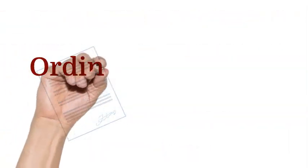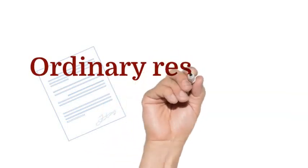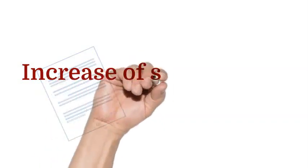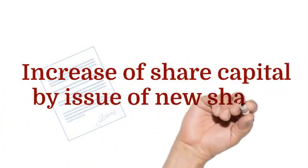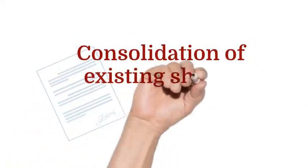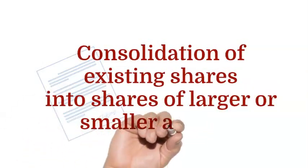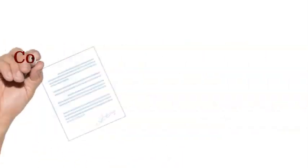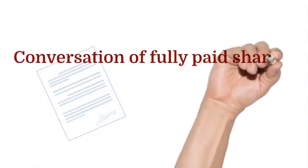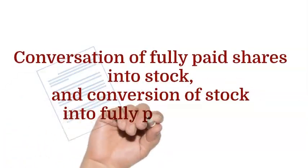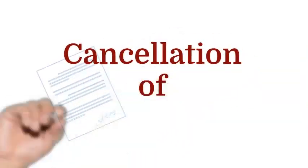The alterations which are made by passing an ordinary resolution in the general meeting are: increase of share capital by issue of new shares; consolidation or subdivision of existing shares into shares of larger or smaller amount; conversion of fully paid shares into stock and conversion of stock into fully paid shares; and cancellation of unissued shares.